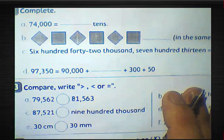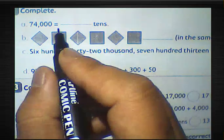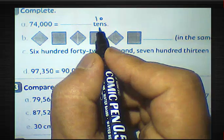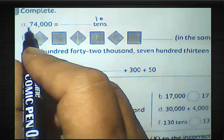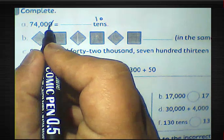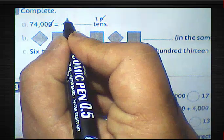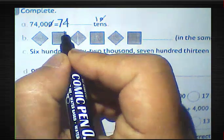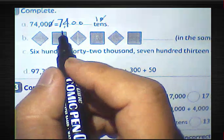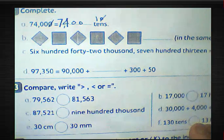Which number completes: 74,000 equals blank tens? We divide 74,000 by 10 — meaning 10 times what equals this number. We cancel a zero, and the result will be 7,400. So 74,000 equals 7,400 tens.